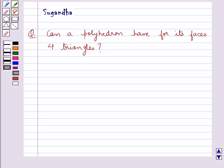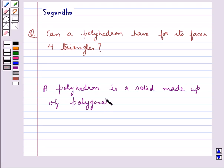First let's see what a polyhedron is. A polyhedron is a solid made up of polygonal regions called its faces.